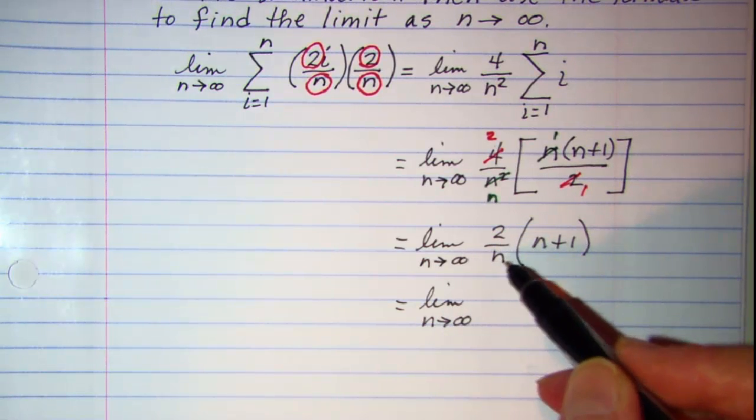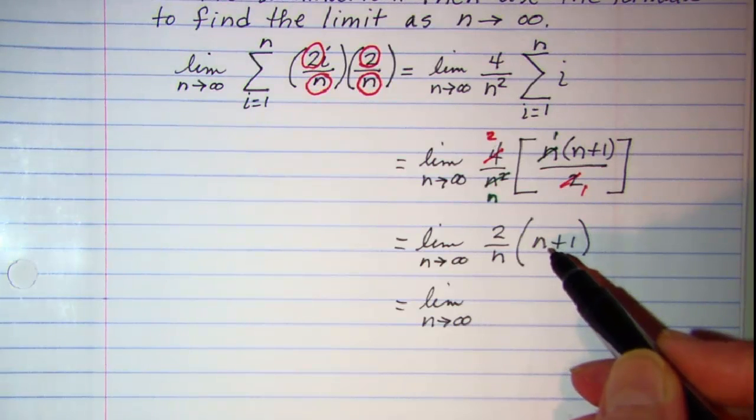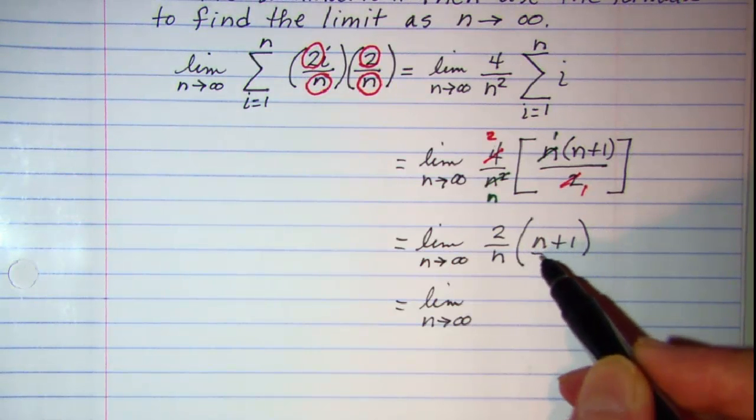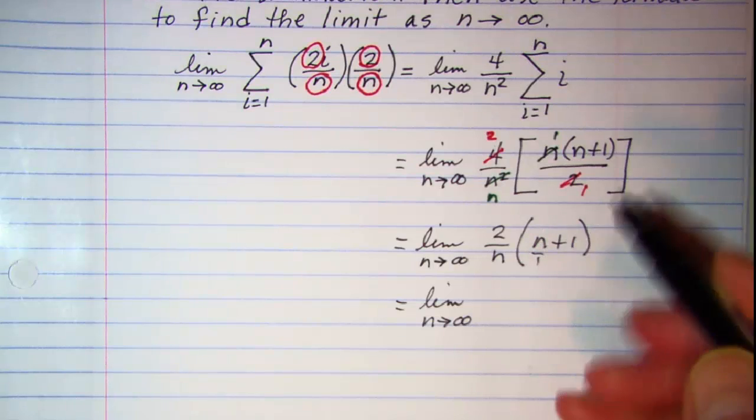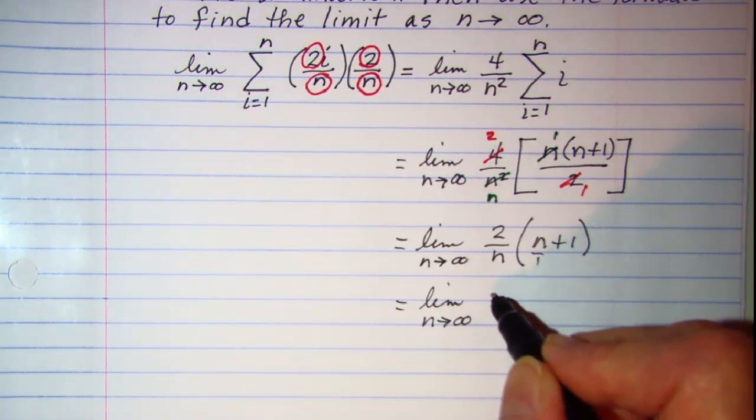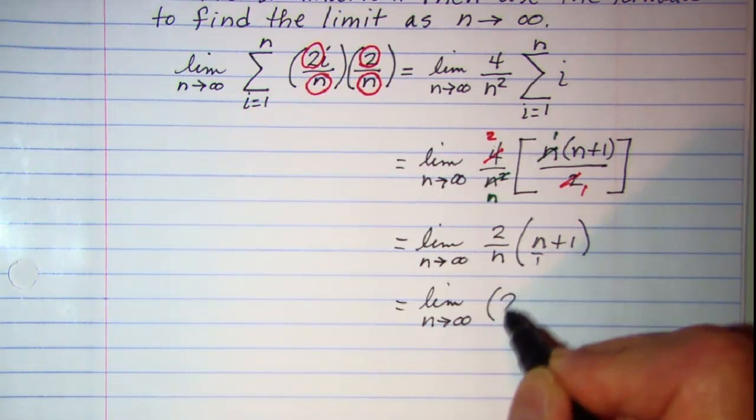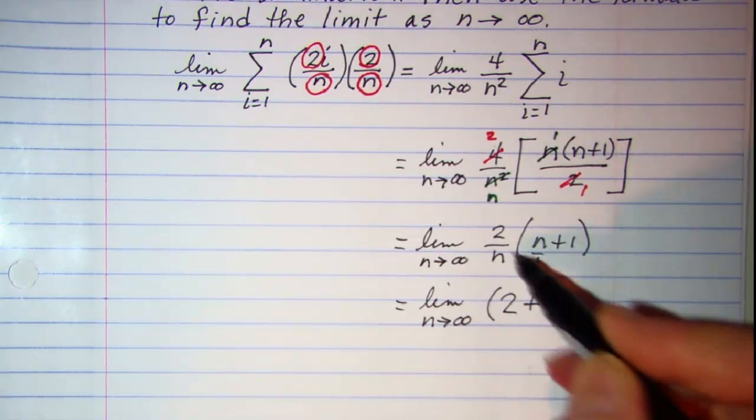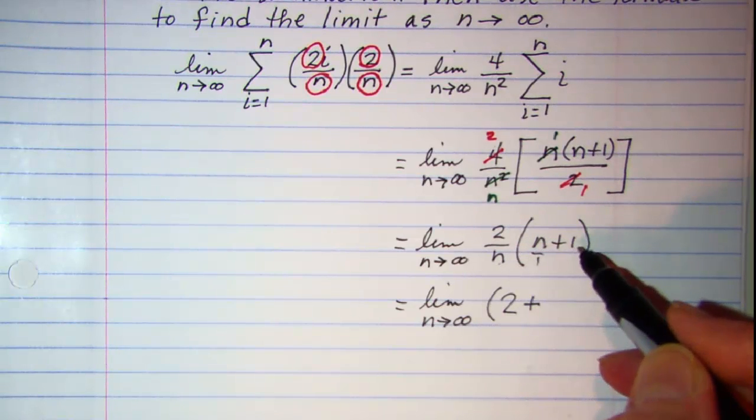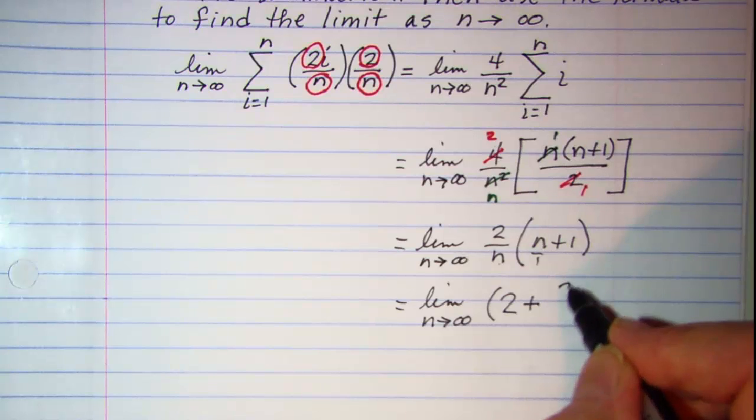When we distribute this, 2 over n times n over 1, those n's will cancel and I just have 2. And then 2 over n times 1 is 2 over n.